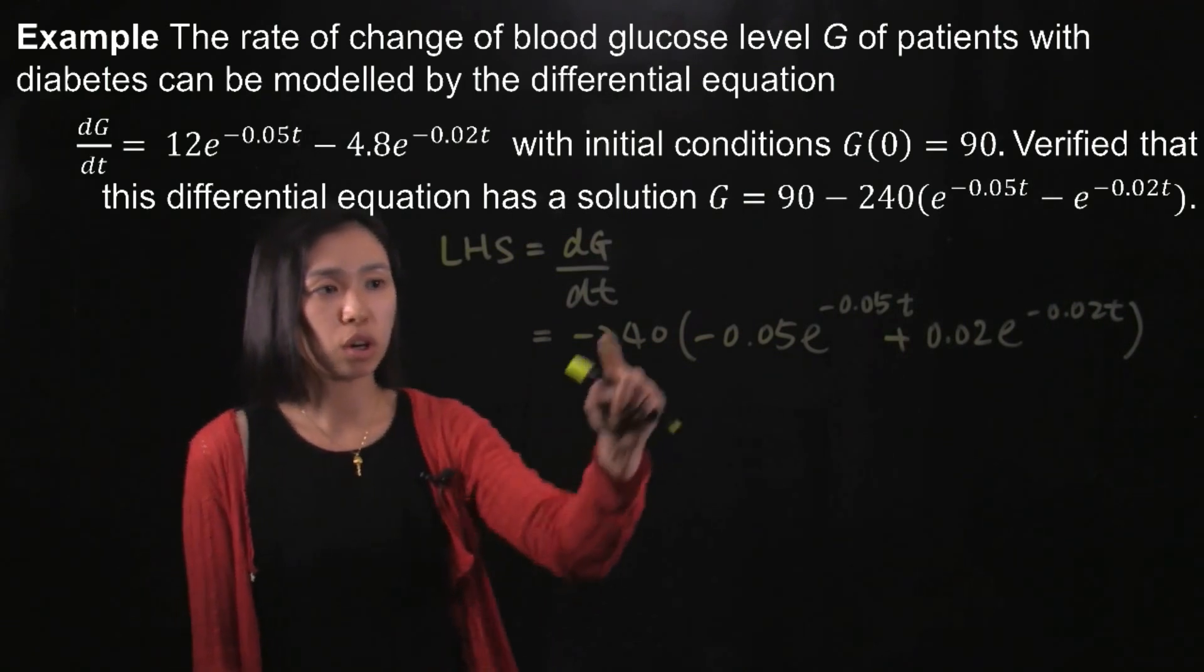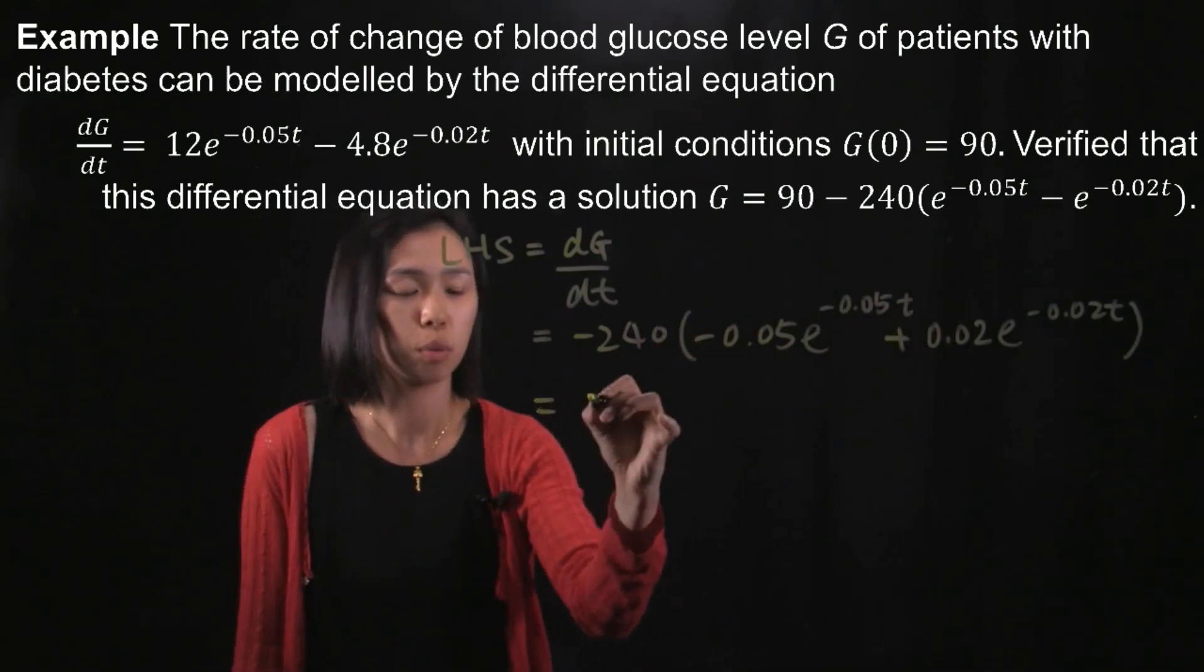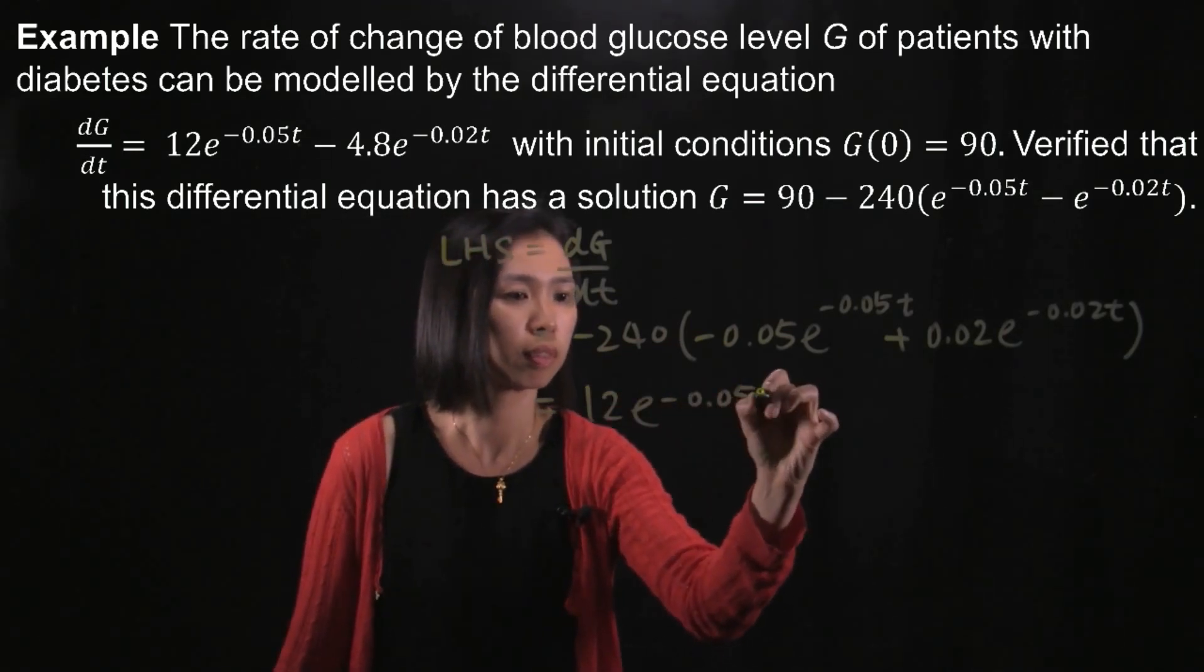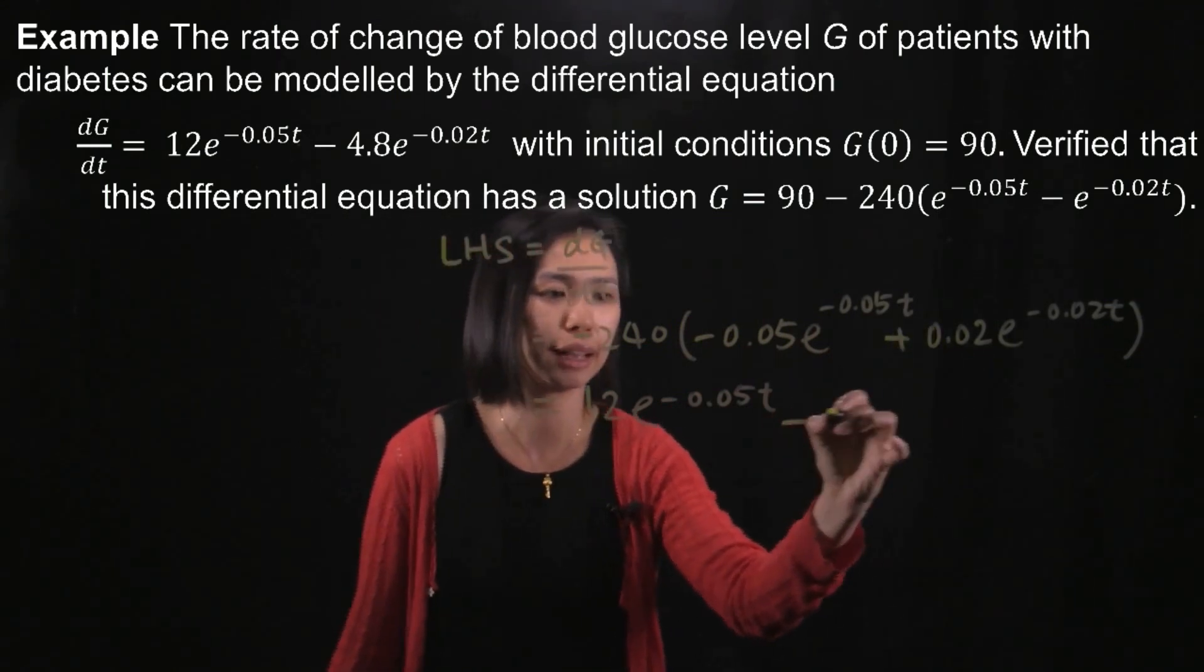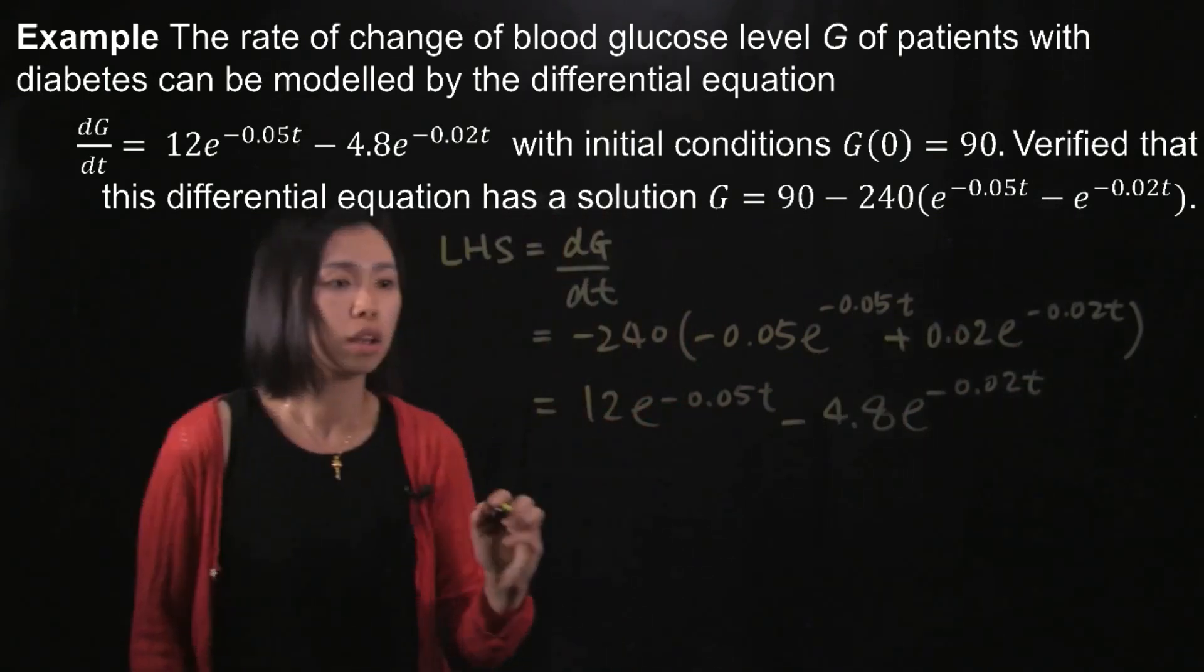Then what we try to do is expand the expression. We've got 12e to the power of negative 0.05t, and then negative 240 multiplied by 0.02 gives you negative 4.8e to the power of negative 0.02t.